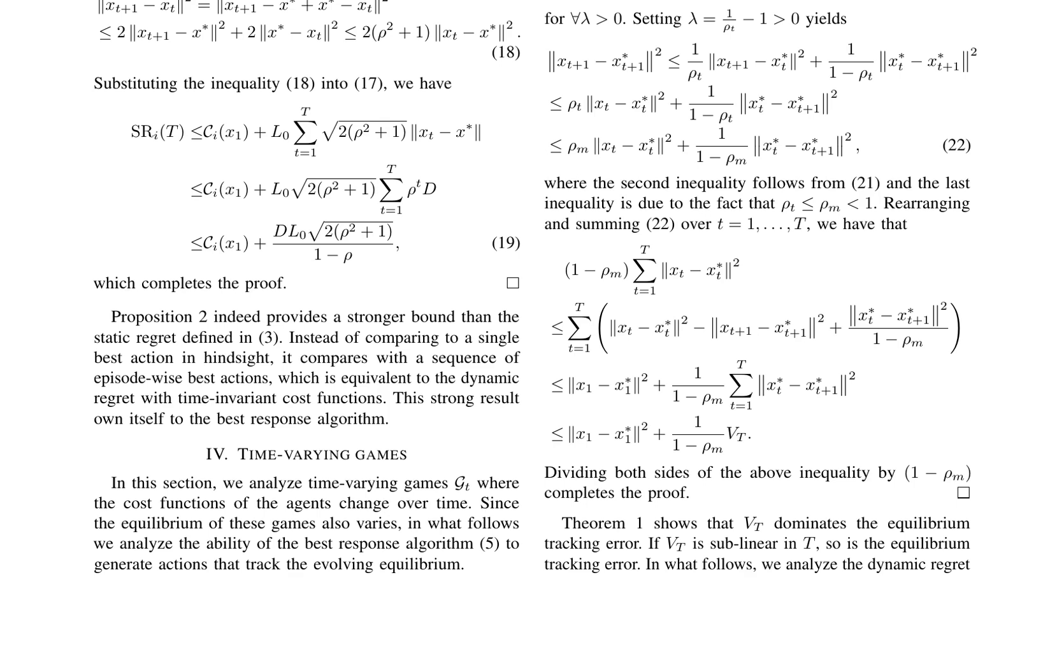This analysis demonstrates the effectiveness of the best-response algorithm in tracking the evolving equilibrium in time-varying games, with an error that is controlled by the equilibrium variation. This has implications for understanding how well the algorithm can adapt to changing conditions in real-world scenarios.